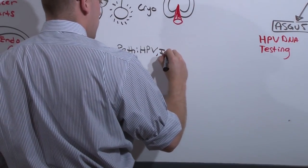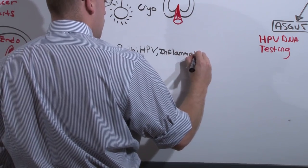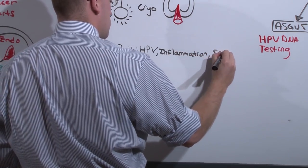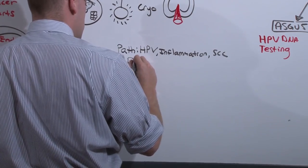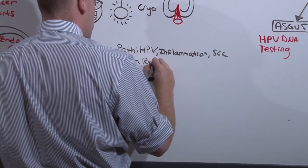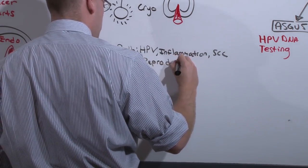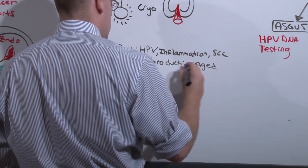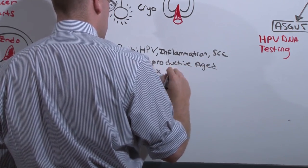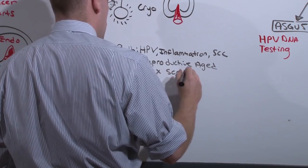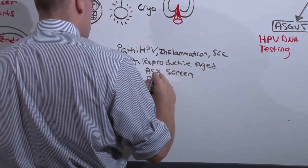The patient is going to be a reproductive age female who's going to present either as an asymptomatic screen on pap or post-coital bleeding.